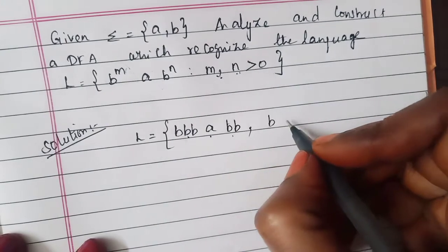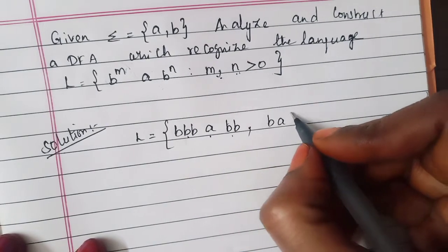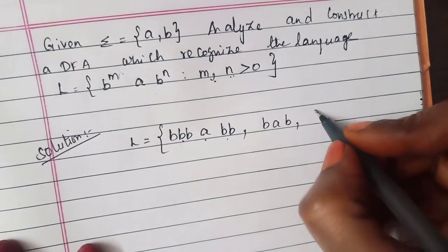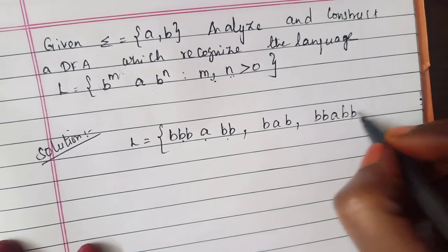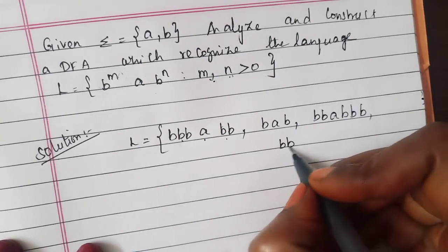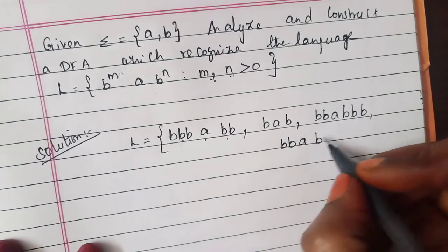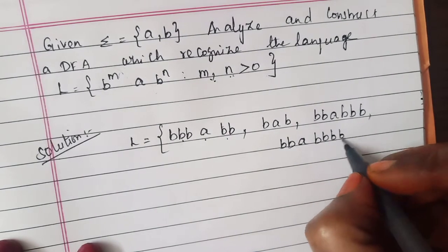So for this we can write like bba, bbabb, bbabbb, bbabbbb, etc.